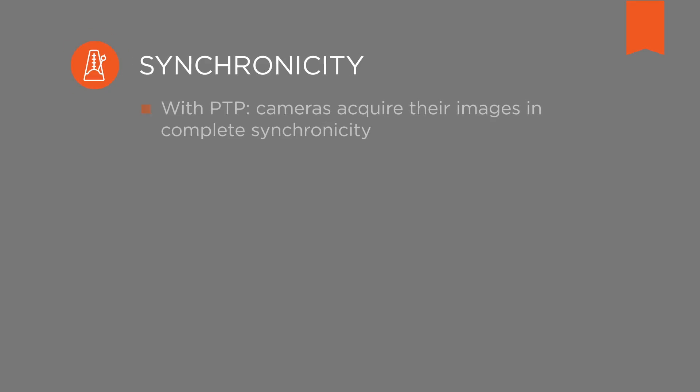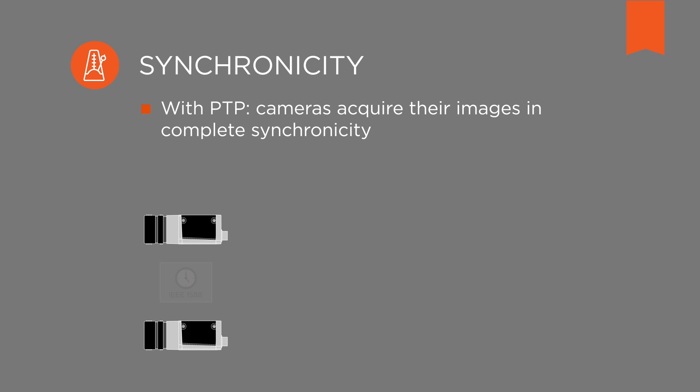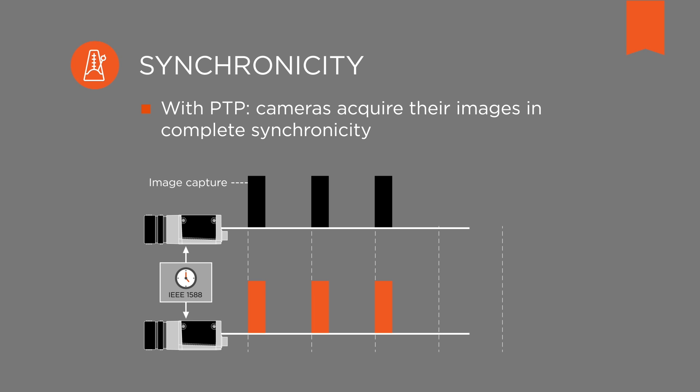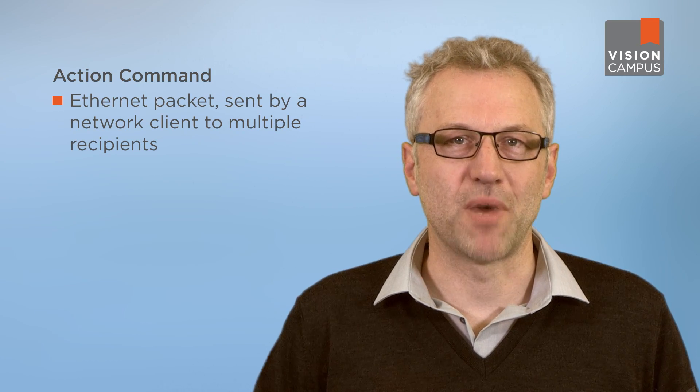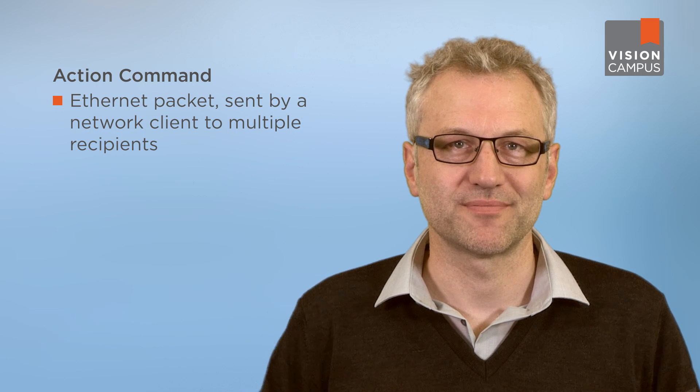Thanks to PTP, all cameras are working with the same system time, meaning all individual cameras capture each image at the exact same time. Since the earliest stages in their development, GigE Vision cameras have been able to receive and react to what is known as action commands. An action command is an Ethernet packet that can be sent by a network or client to multiple recipients on a network, and the most important use case for it is triggering an image over the network.